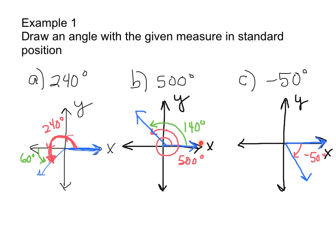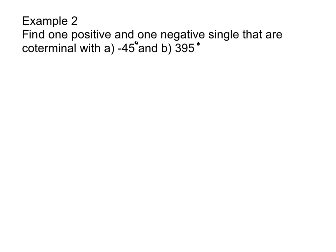That's because they're coterminal — their terminal sides coincide. Your initial side is the x-axis; the terminal side is the other side. 140's terminal side and 500's terminal side are the same — that's why they're coterminal. An angle coterminal with a given angle can be found by either subtracting or adding multiples of 360. So now we're going to use those coterminal angles.